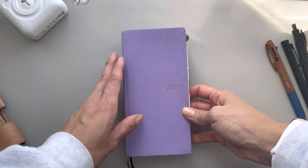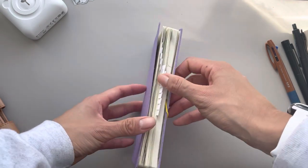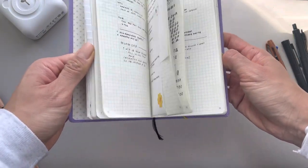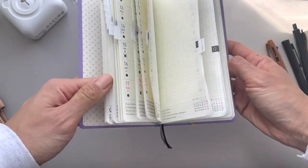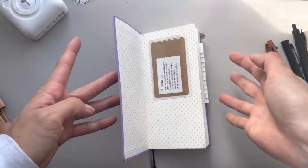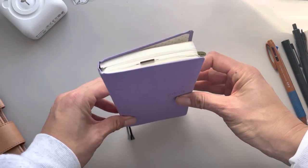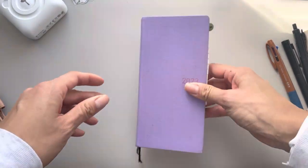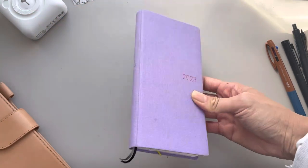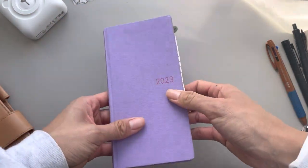So this is a Hobonichi Weeks Mega. It is the January start in the English version, so the bottom quotes and everything are in English. Not that it makes a difference because I never read it anyways. I have it super minimal, minimal as you can tell. I've taken it out of any kind of cover, and I actually prefer it like this the best.